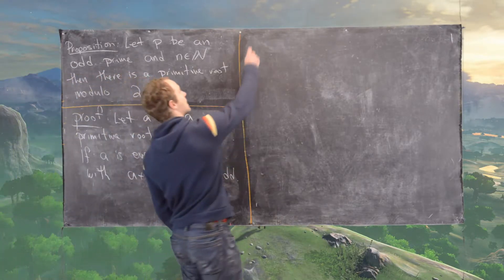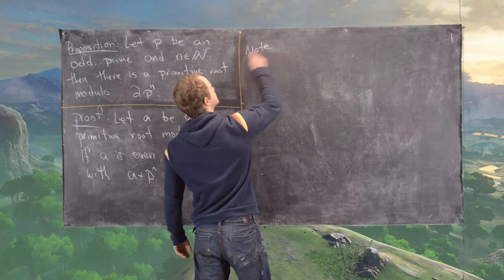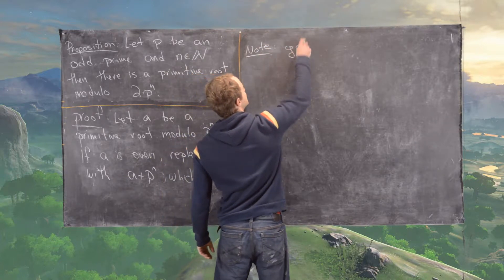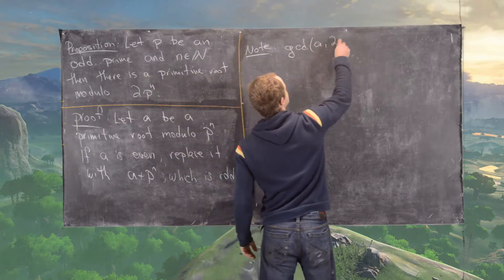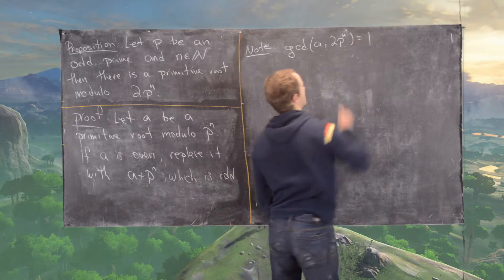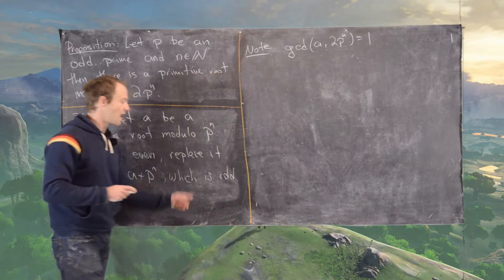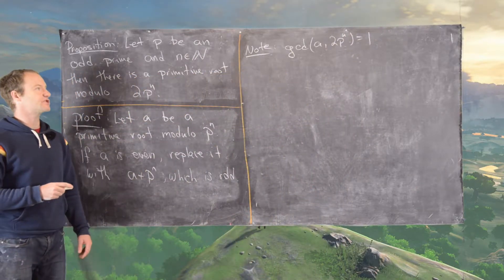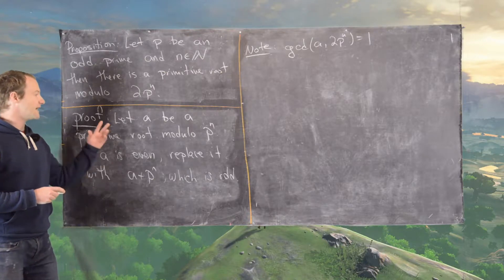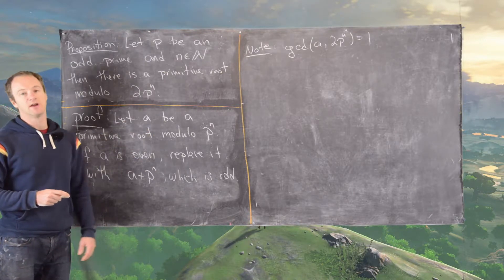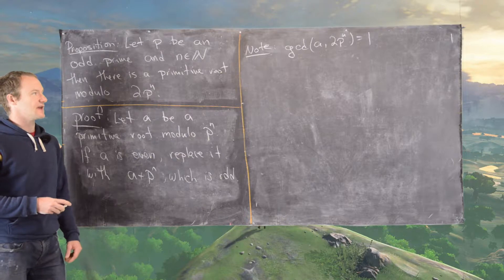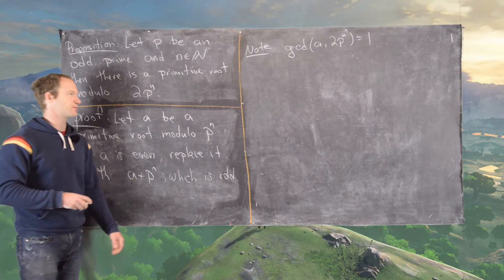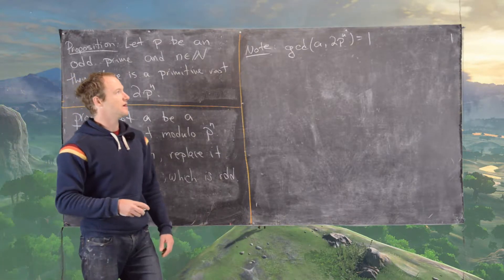Now notice that the GCD of a with 2p^n equals 1. It's odd, which means its GCD with 2 is 1. And it's a primitive root mod p^n, which means its GCD with p^n is 1.